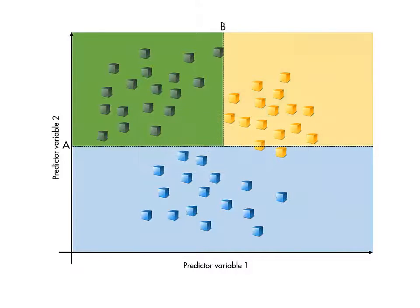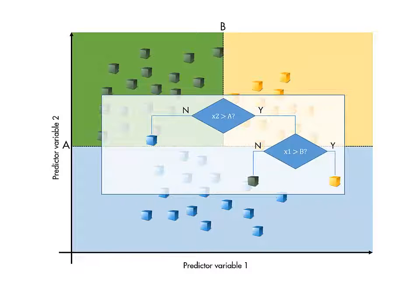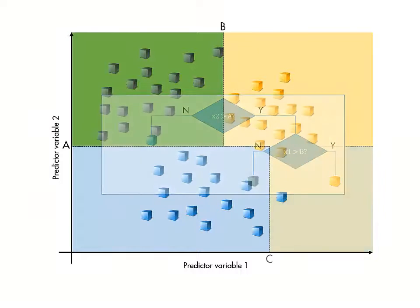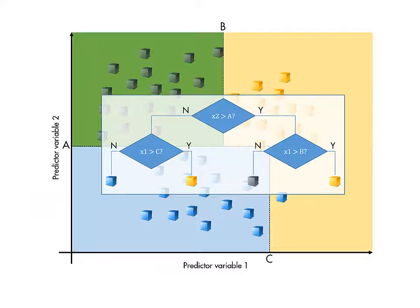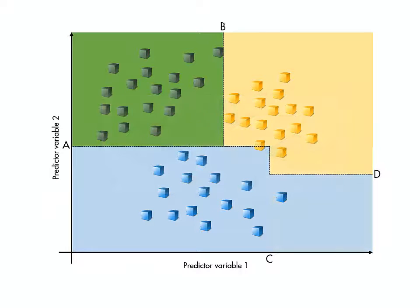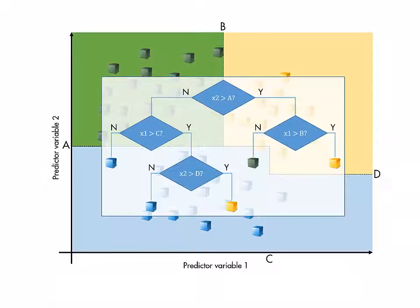Then the process repeats at the next level of the tree. This continues until all the branches terminate, which happens when no further splits on that branch can improve the criterion value.